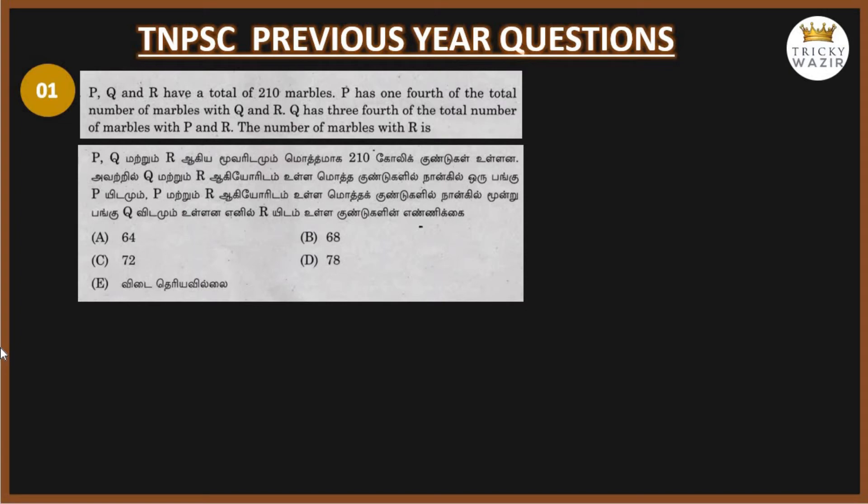P, Q, R have a total of 210 marbles. This is the first equation. P plus Q plus R equals 210. P equals one-fourth of Q plus R. So 4P equals Q plus R. This is the second equation.